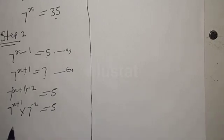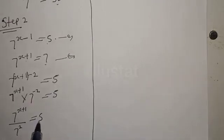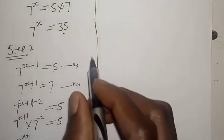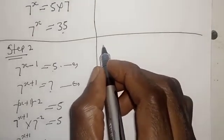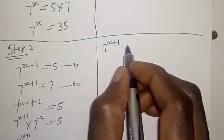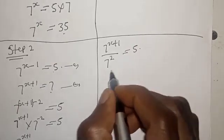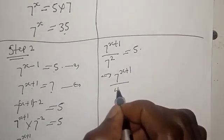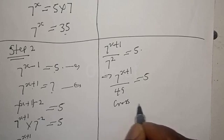We can see it's very simple. Then we have 7 raised to power x plus 1 all over 7 raised to power 2 is equal to 5. And 7 raised to power x plus 1 over 49 — since 7 squared is 49 — is equal to 5. Let's use the cross-multiply method again.